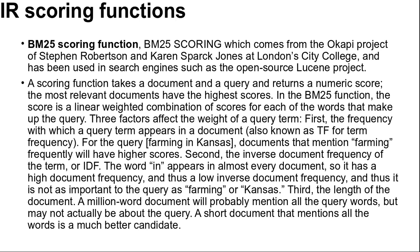Next is the IR scoring function. Most IR systems have abandoned the Boolean model and now use models based on the statistics of word counts. The BM25 scoring function, which comes from the Okapi project of Stephen Robertson and Karen Spark Jones at London City College, has been used in search engines such as the open source Lucene project. A scoring function takes a document and query and returns a numeric score. The most relevant documents have the highest score. In the BM25 function, the score is a linear weighted combination of the scores for each of the words that make up the query.